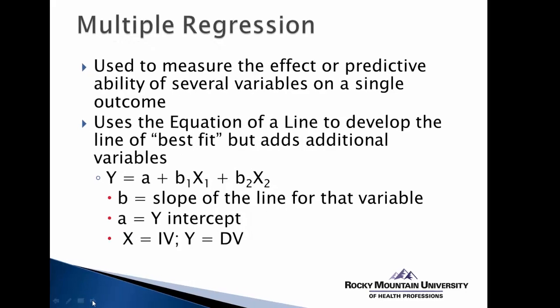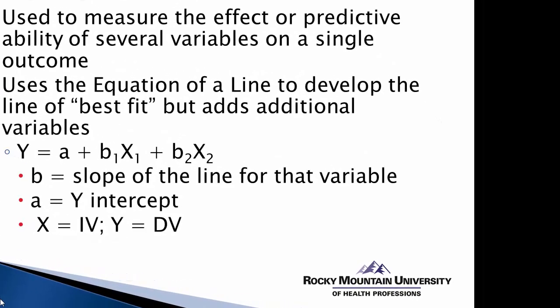Previously we talked about simple linear regression, in which we're using one predictor or x variable to predict a score on a single outcome or y variable. We learned how to do that, and our ability to do that depends on a correlation between the x and y variable. It works pretty well as far as our ability to use one predictor to predict an outcome. But if we wanted to use multiple predictors to predict that single outcome, we can still use the process of linear regression — except now it becomes multiple linear regression.